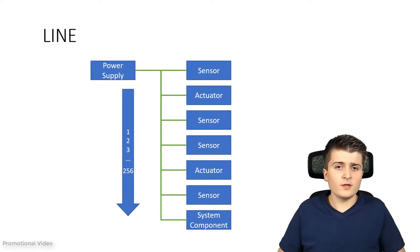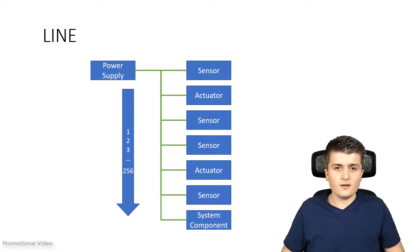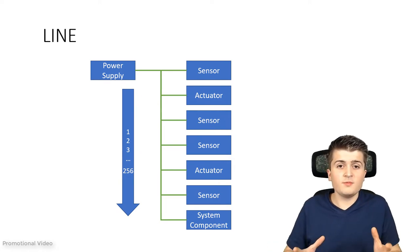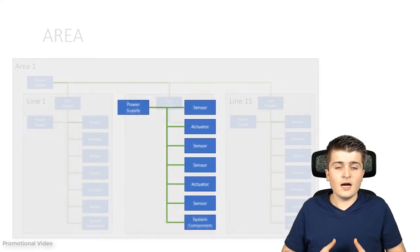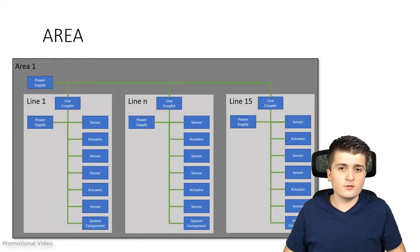But what is now if we have multiple lines? Because we either have more than those 256 devices or we want to structure our network in a way that for example each floor in a building has its own line. But we need to connect them so that they can communicate with each other. How do we achieve this? Well this is no problem.